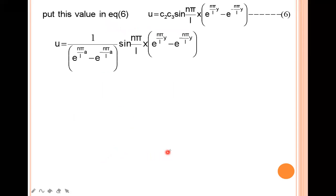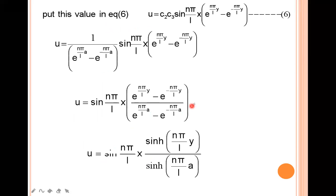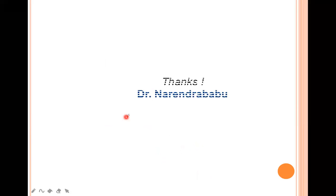You can also convert this into hyperbolic form, writing the numerator as sinh(nπy/L) and the denominator as sinh(nπa/L). So the final solution can be written as u = sin(nπ/L · x)·sinh(nπy/L)/sinh(nπa/L). Thank you for watching, please subscribe.